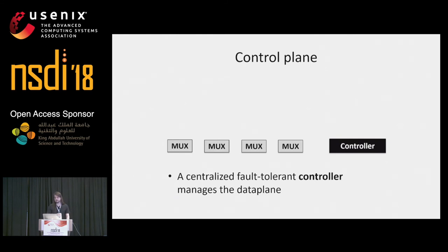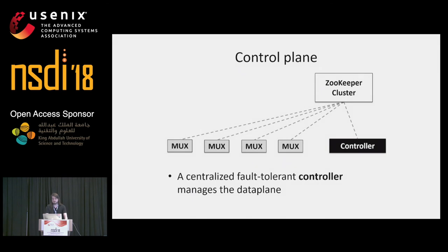Let's take a look at the control plane. The bucket-to-DIP mappings are managed by a centralized controller, which is fault tolerant. The controller uses a ZooKeeper cluster to store its state and also to disseminate the bucket-to-server mappings. ZooKeeper is a reliable key-value store, and it scales well for write-once, read-many workloads as we have with Beamer.